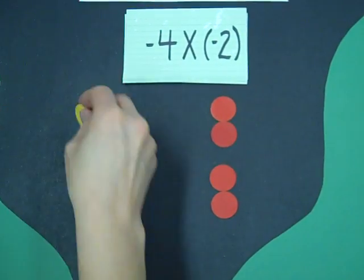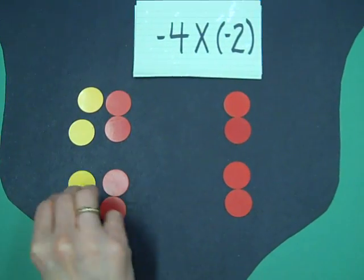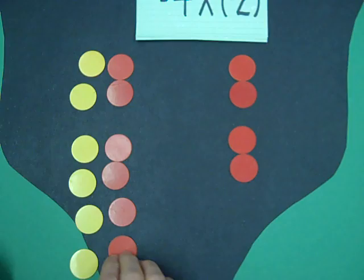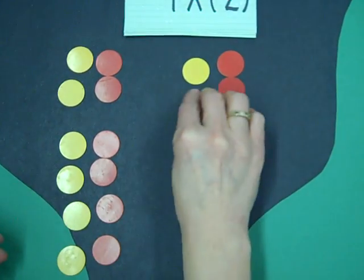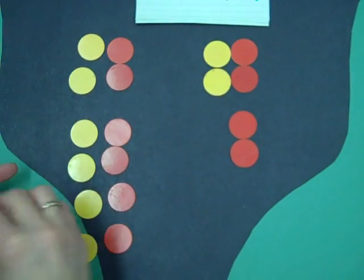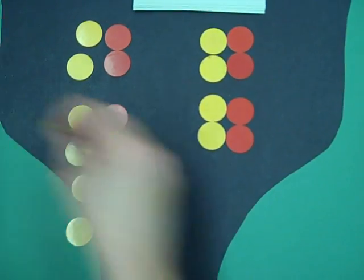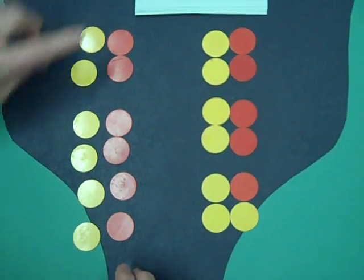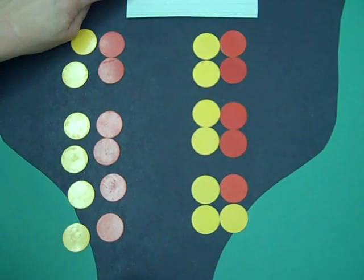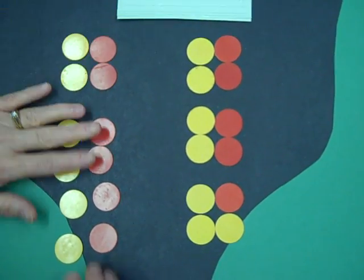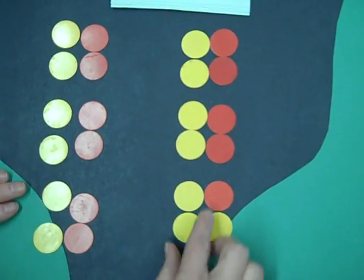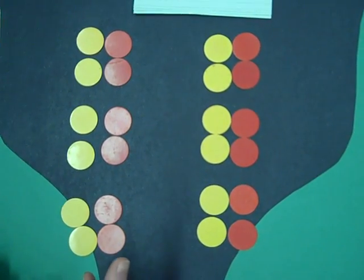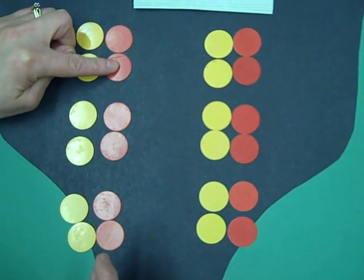Here's negative four times negative two. So if I get these set up as nothing in my pit again... The first number is going to say I'm going to remove four groups. I'm going to remove four groups. And in each of those groups is a negative two.